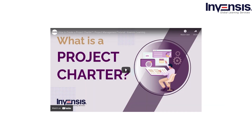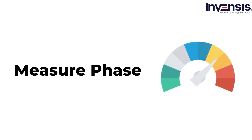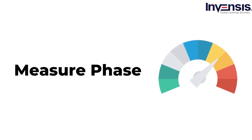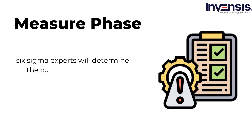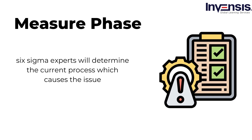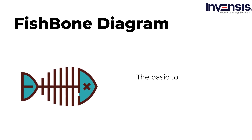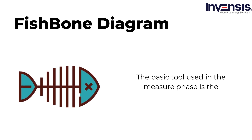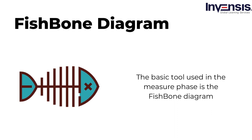For more information on the project charter, refer to the link in the description. Our next phase is measure. In the measure phase, Six Sigma experts will determine the current process which causes the issue. There are certain metrics based on the project. The basic tool used in the measure phase is the fishbone diagram. In this phase, it is crucial to identify the main cause of the problem. Therefore, the fishbone diagram is one of the important tools in Six Sigma to identify the potential root cause of the issue.